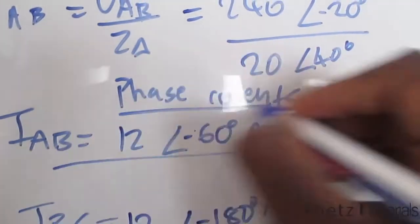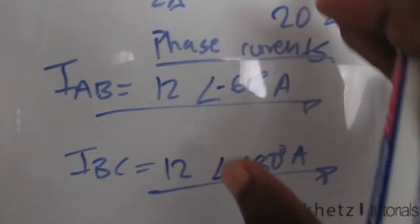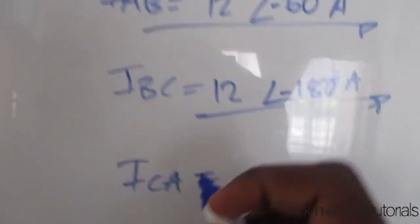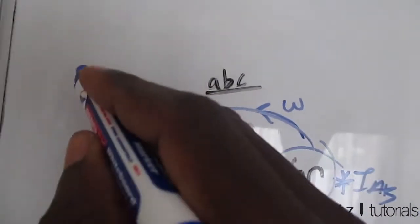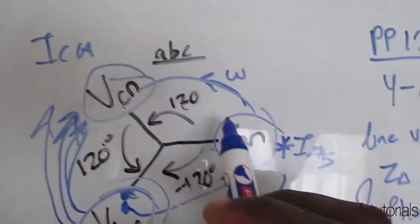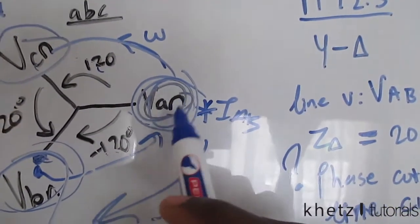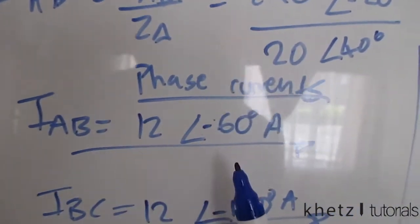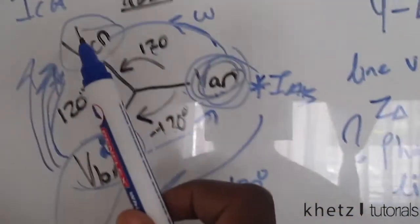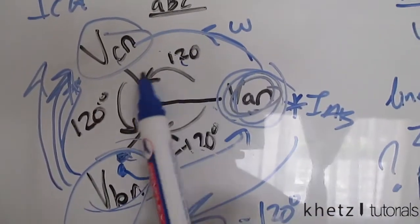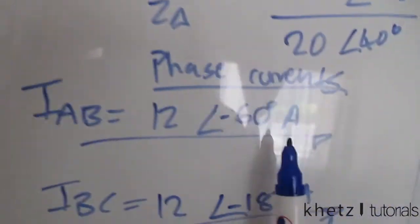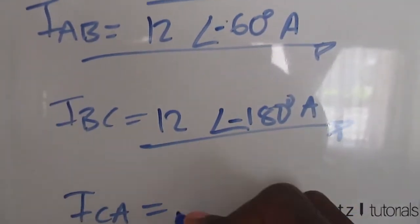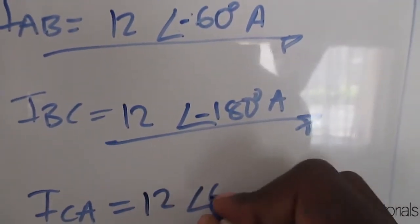Next we need ICA. ICA corresponds to the A position in the sequence. To find this one you actually add 120 degrees to the angle of IAB. Adding 120 degrees to negative 60 gives us 60 degrees, so ICA is 12 at an angle of 60 degrees.